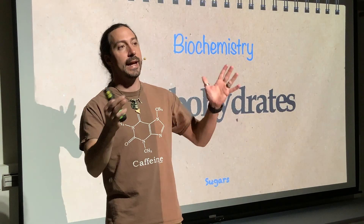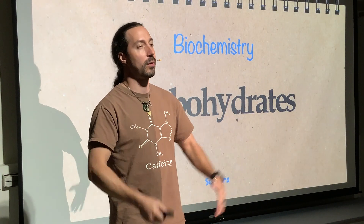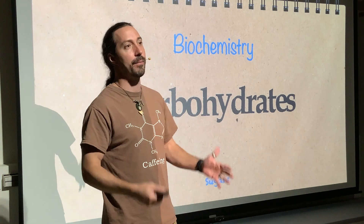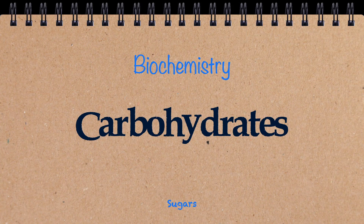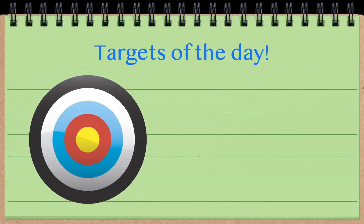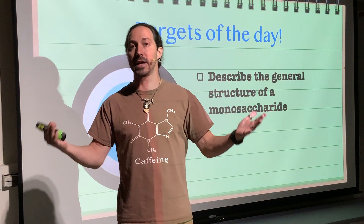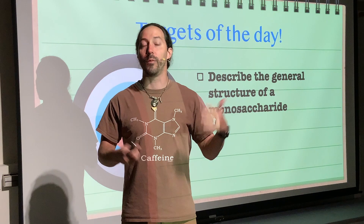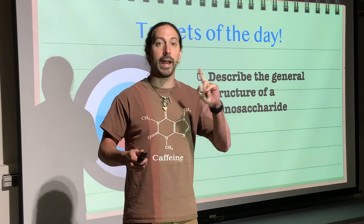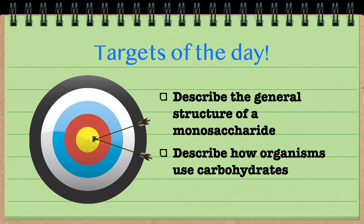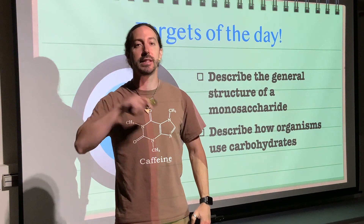Hello and welcome to this next episode of Tutor Tutors, where we are going to continue on biochemistry, looking at our second biomacromolecule: carbohydrates. Our learning targets for today are, first, that you'd be able to describe the general structure of a monosaccharide — which means we are going to define what a monosaccharide is — and second, describing how organisms use carbohydrates.